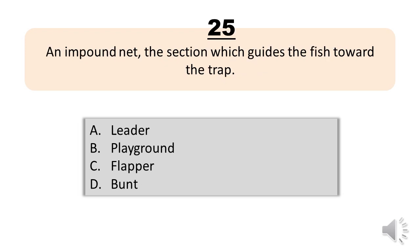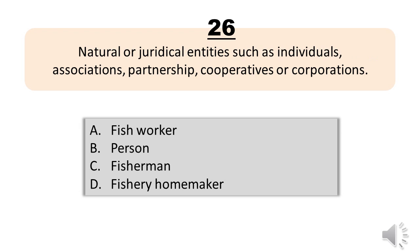Number 25. An impound net, the section which guides the fish toward the trap. A. Leader. B. Playground. C. Flapper. D. Bunt. The correct answer is Letter A. Leader.